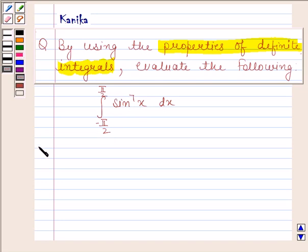Let us now begin with the solution. Let f(x) = sin^7(x). We will first check whether f(x) is an even function or an odd function.